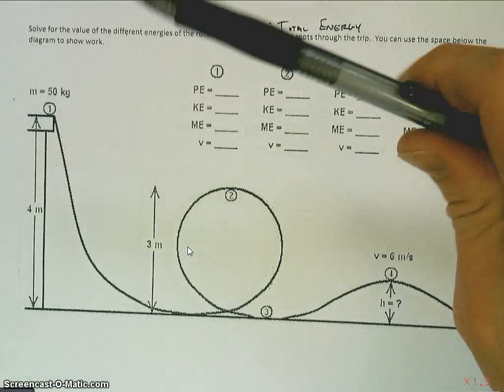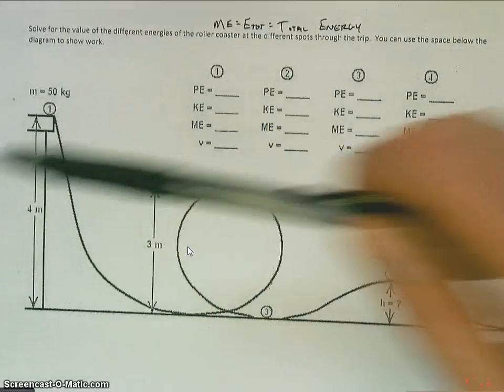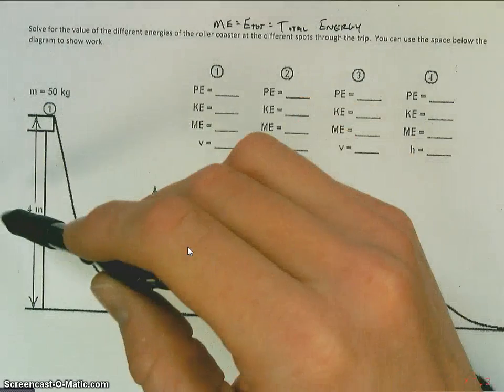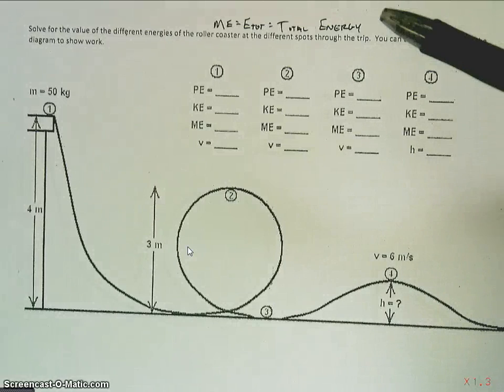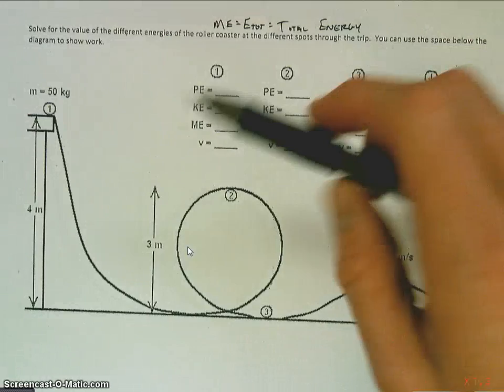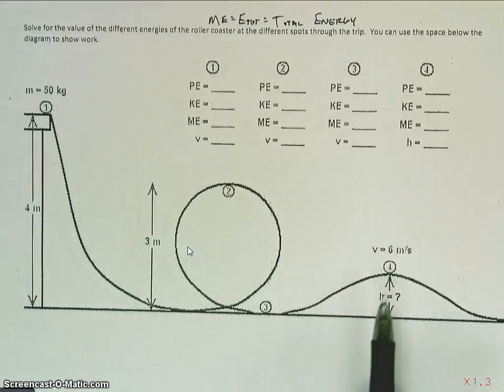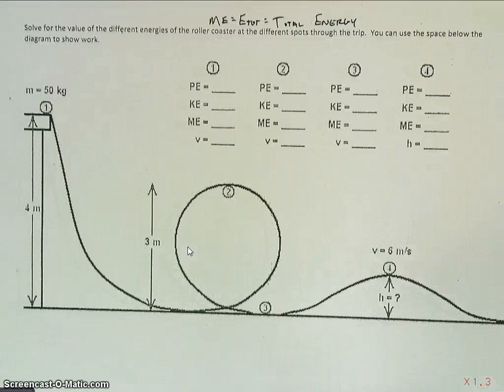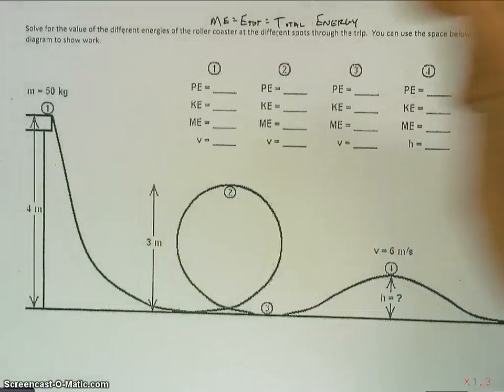So for this problem we're looking to solve for different types of energy based off of really one piece of information: the mass of the roller coaster and the height at which it starts at. That being said, we do have another piece, making the assumption that energy is conserved.